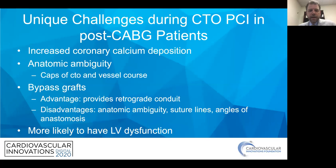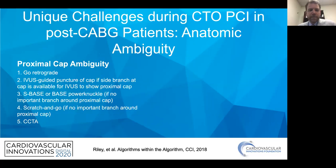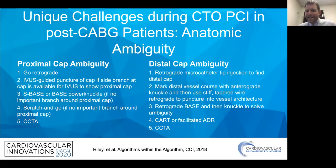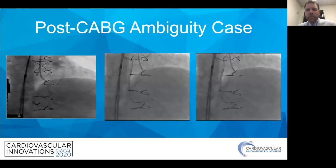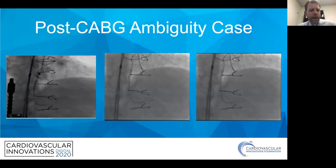Anatomic ambiguity is a really big deal in post-CABG patients. There are algorithms for dealing with both proximal cap ambiguity and distal cap ambiguity, including advanced CTO techniques like BASE, BASE power knuckle, CART, and facilitated ADR — all explained in the algorithms within the algorithms document.